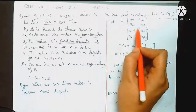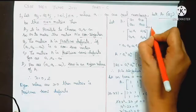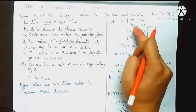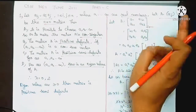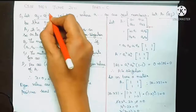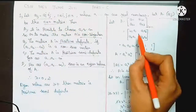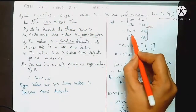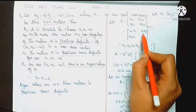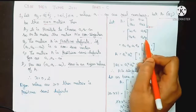Let A equal to a 2 cross 2 matrix. That is A with entries: A(1,1)=1, A(1,2)=2, A(2,1)=2, A(2,2)=1. So we will split it into A(1,1), A(1,2), A(2,1), A(2,2).